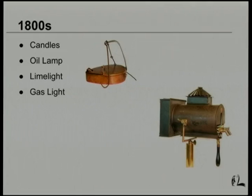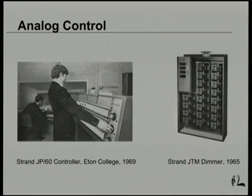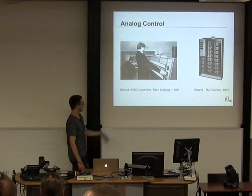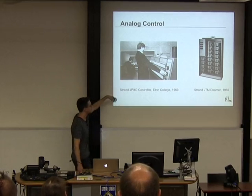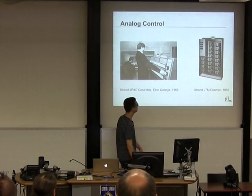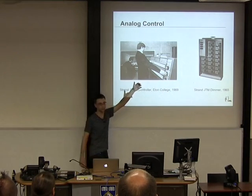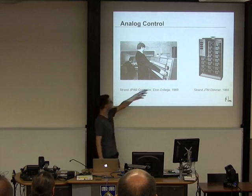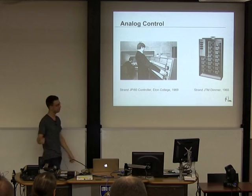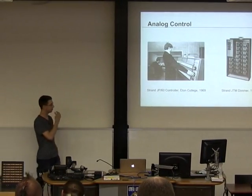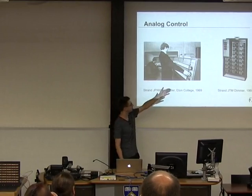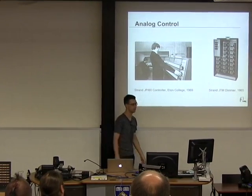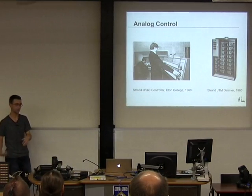That continued through the 1800s and the early 20th century. Things really started changing when electricity was used more. You can see systems here from the 60s — on the left, a 60-channel control desk; on the right, a 20-channel dimmer about the size of a full data-center rack. Each fader controls the intensity of a single light, so 60 channels, 60 lights, connected to a 20-channel dimmer. That's how the first remote-control lighting was done.